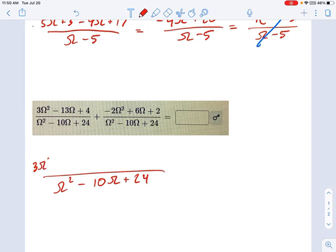I have a 3 omega squared minus 13 omega plus 4 plus a minus. That makes a minus overall, minus 2 omega squared plus 6 omega plus 2 on the top. And as we collect those all together, we're going to get a single omega squared.